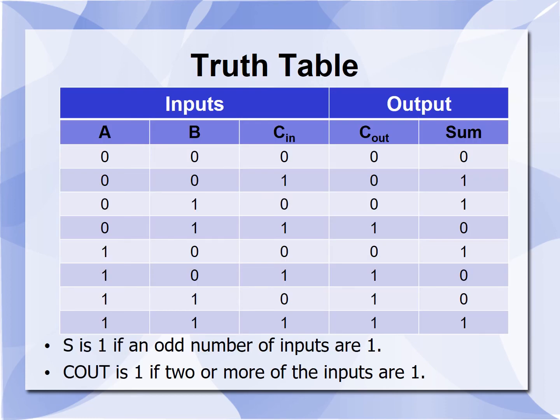The truth table for the three-input full adder is shown here. Since it has three inputs, 2 to the power 3 equals 8, so we have eight different combinations of these three inputs, with corresponding carry output and sum depending upon the inputs.